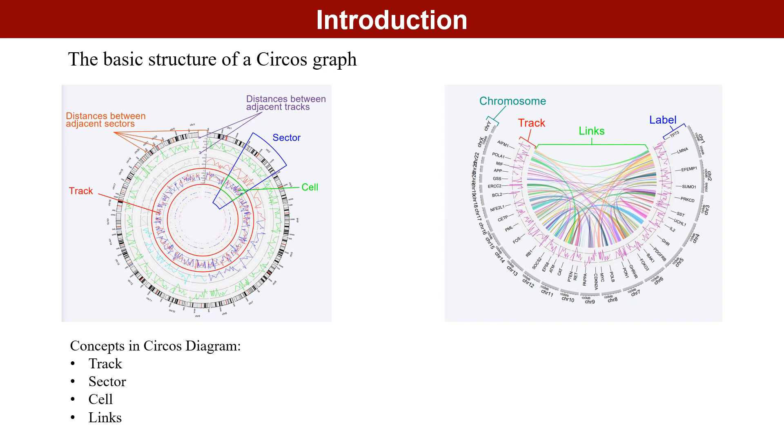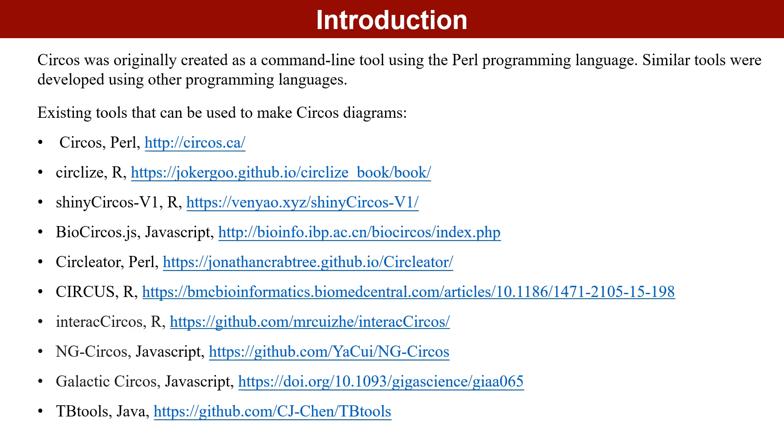Within each sector, genomic data can be represented as cells, which are rectangles representing a single region.